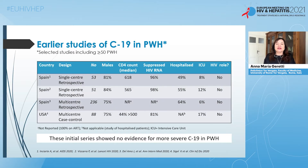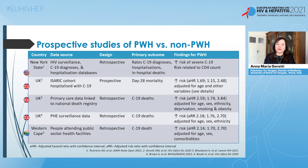Earlier studies in people with HIV did not find that HIV status influenced the risk of severe COVID-19. However, these have been superseded by more recent evidence from studies in the USA, UK, and South Africa, all concluding through different methodologies that people with HIV have about a two- to threefold increased risk of severe outcomes after a diagnosis of COVID-19. The magnitude of this risk has been consistent across different studies.